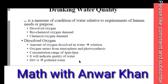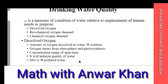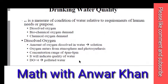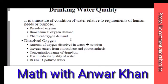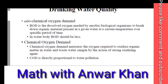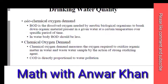How much oxygen is in the water? That is the biochemical oxygen demand (BOD), and there is also the chemical oxygen demand (COD). We will study these three one by one. First is dissolved oxygen — the amount of oxygen dissolved in water. Oxygen enters from the atmosphere and through photosynthesis. During photosynthesis, plants expel oxygen which enters the water. Concentration ranges from 4 ppm to 8 ppm. Dissolved oxygen is needed by aerobic biological organisms to break down organic material present in the water over a specific period of time.